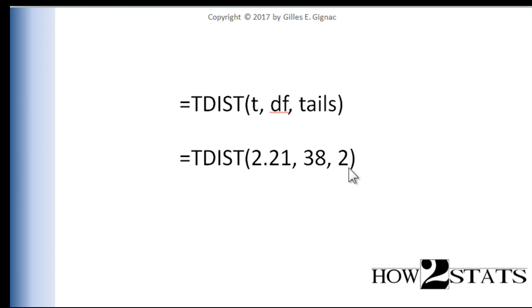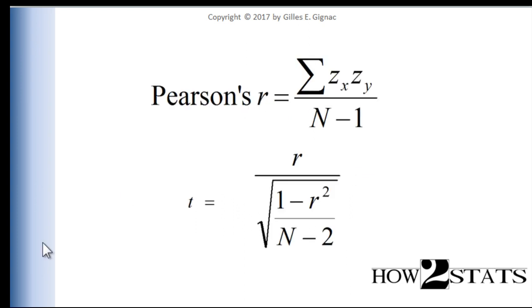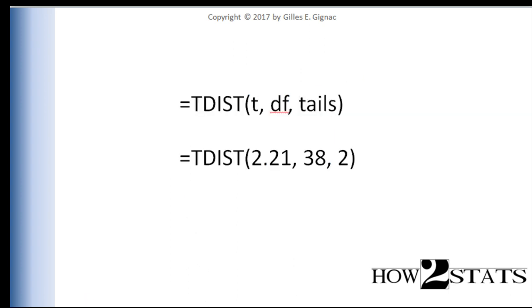This function that I'm talking about here in the correlation context is exactly the same function that was used in the one-sample t-test section of the textbook. You may recall that I called upon the T distribution to find out if a T value associated with a one-sample t-test is statistically significant. We're doing exactly the same thing because the ratio of a correlation by its standard error also follows the T distribution fairly closely.